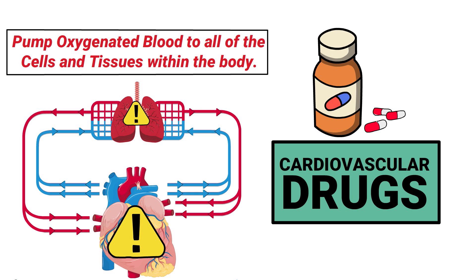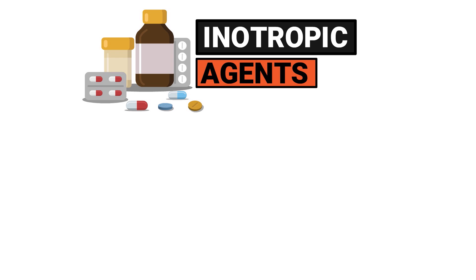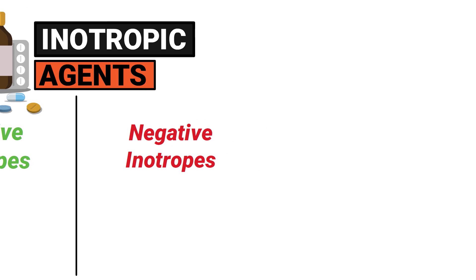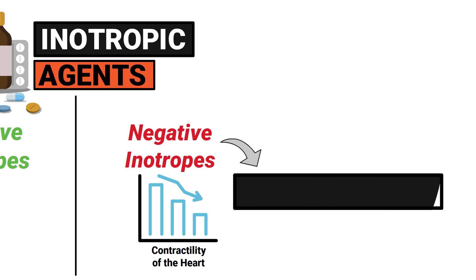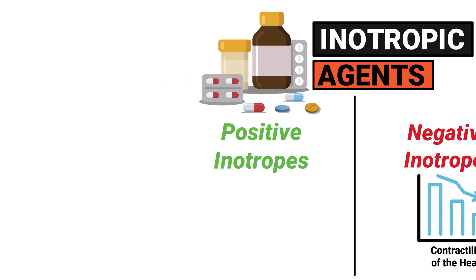All of that to emphasize the fact that cardiovascular drugs are an important class of medication to learn and understand. There are a few primary types, however for this video we're specifically focusing on inotropic agents, which have two different types: positive and negative. Negative inotropic agents decrease the contractility of the heart, however this class of drugs overlaps with antiarrhythmic agents, which is a topic covered in a separate video. For this one, we're going to focus on the positive inotropic agents.